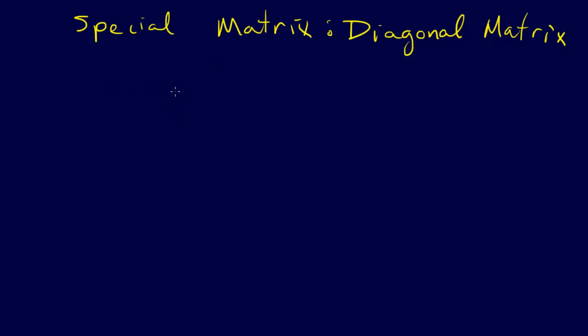So then we have another special type of matrix, which is a diagonal matrix. A diagonal matrix is just a matrix, let's say A.